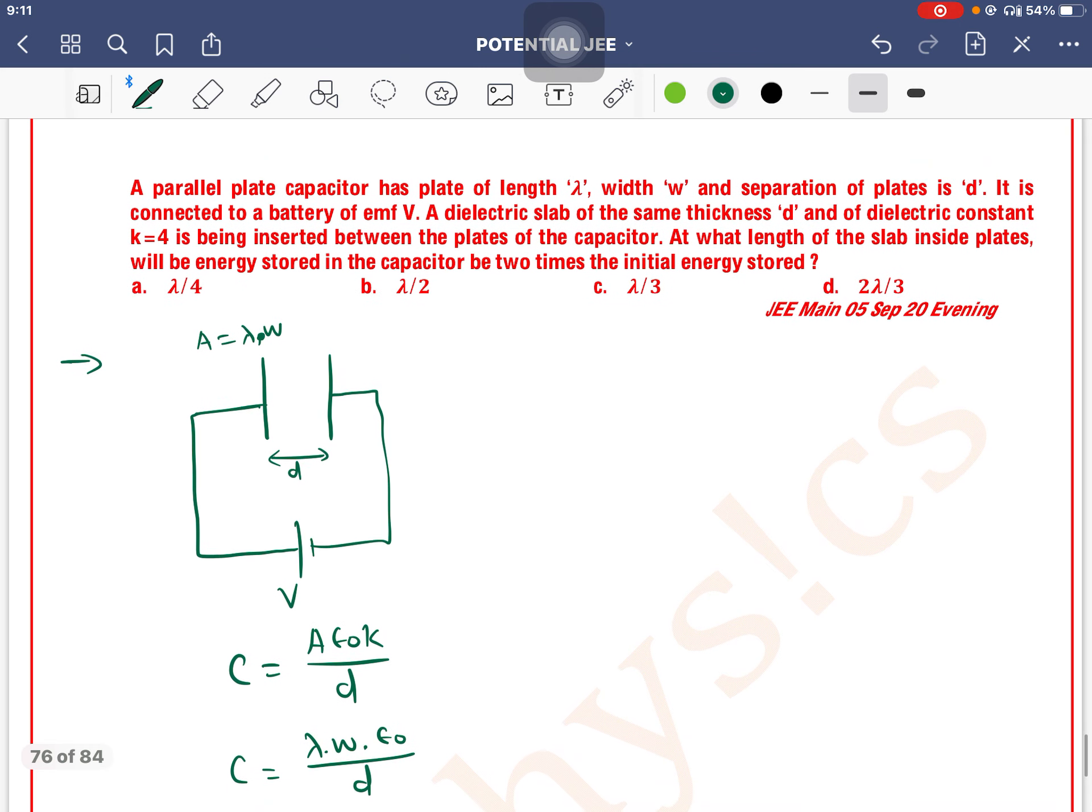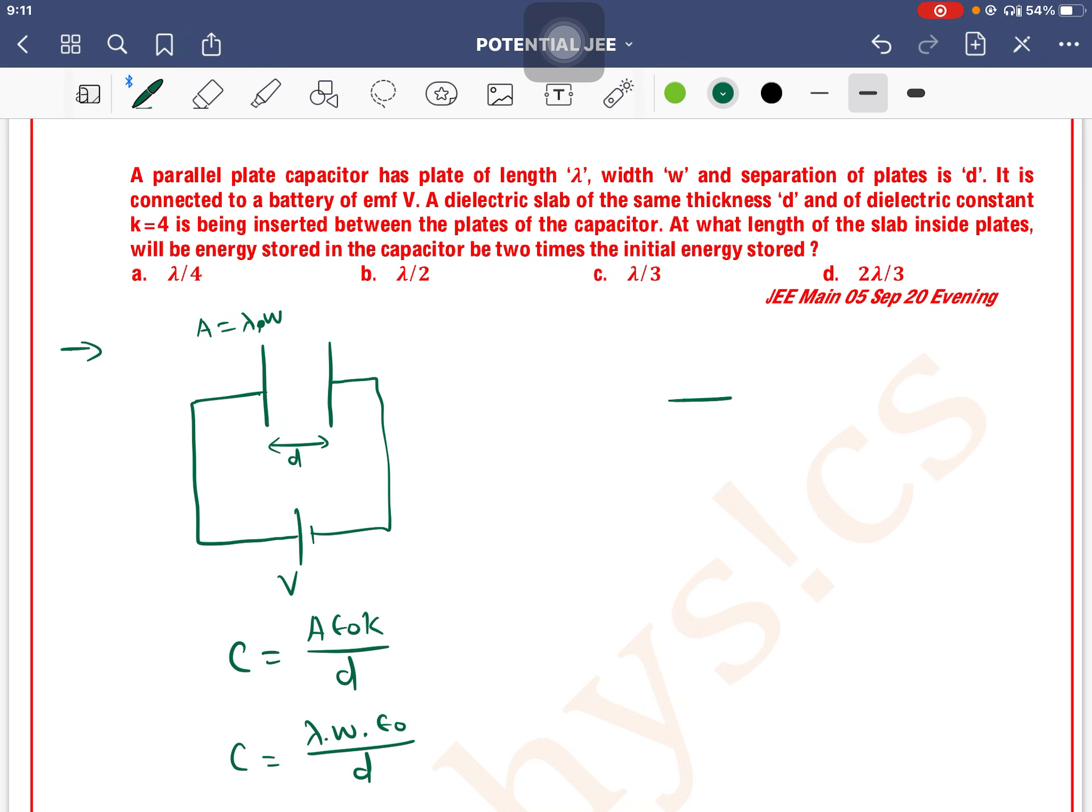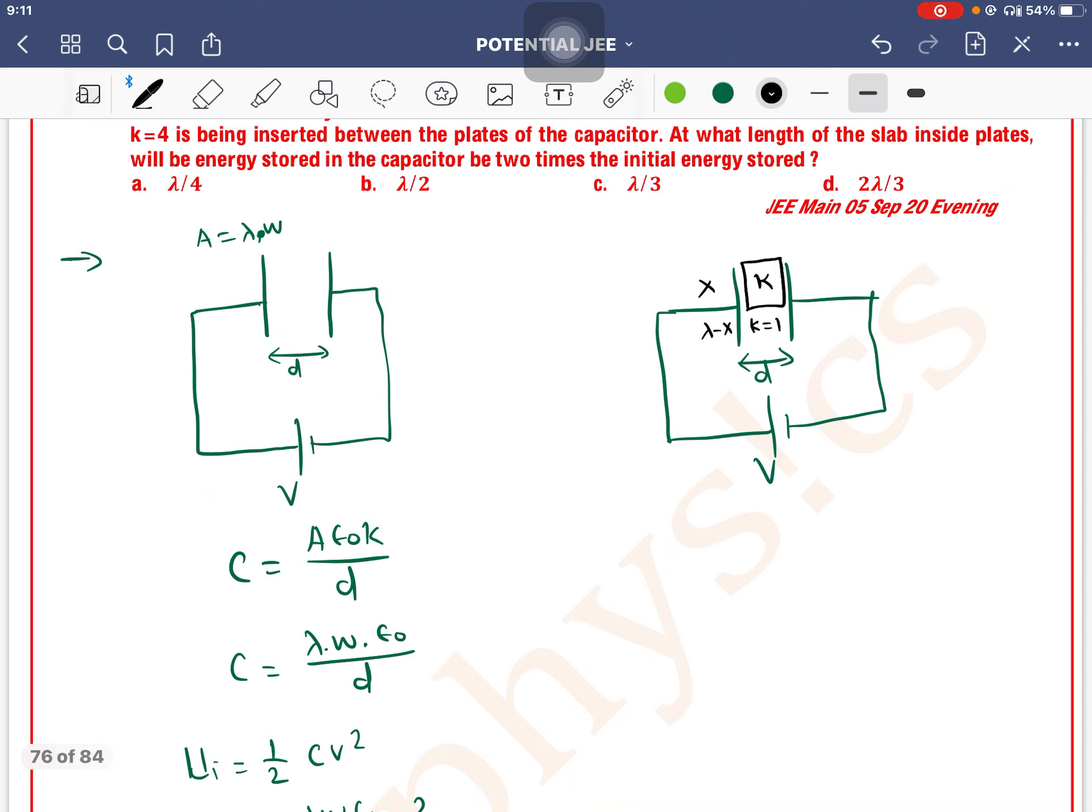Now, at what length of the slab inside the plate will the energy stored be doubled? When the dielectric is inserted to a length x, the remaining part has dielectric constant 1. The length with dielectric is x, and the length without dielectric is lambda minus x. This basically creates two capacitors with capacitances C1 and C2.